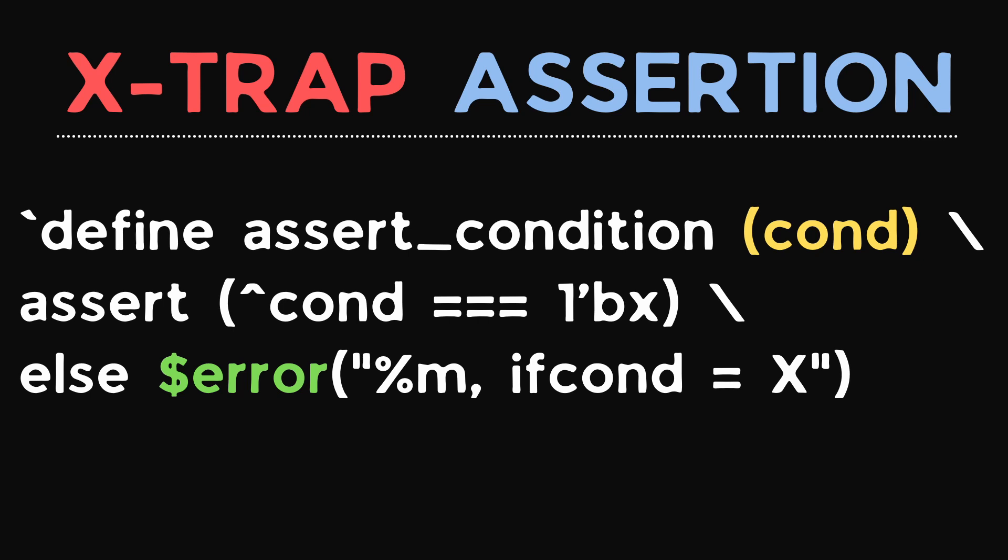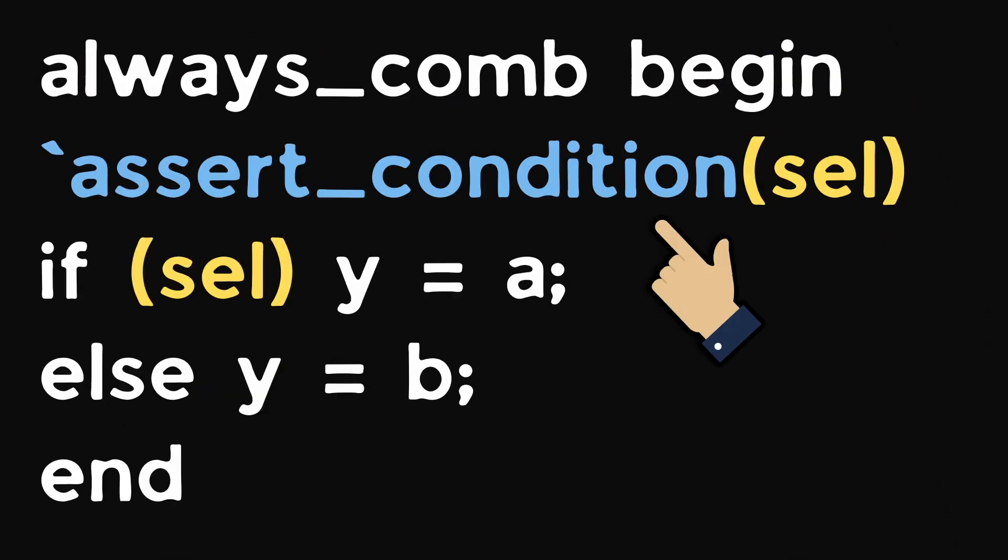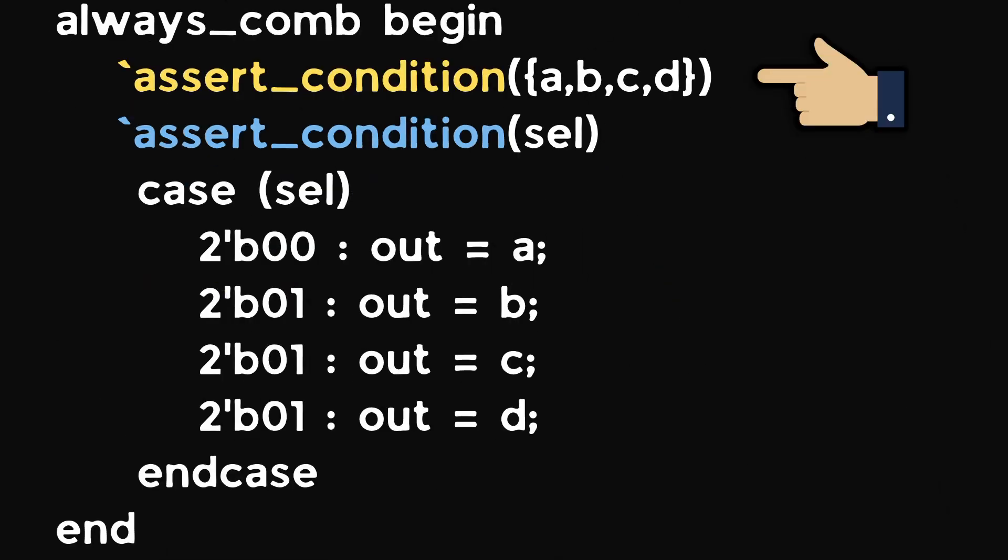We need to add this immediate assertion before the conditions and avoid all the hazards. If any X is detected, an error will be thrown. Before evaluating the condition, we are checking the value whether it's X or not using this assertion. Here, we are evaluating the input values along with the condition.